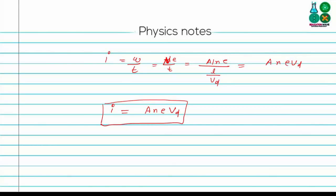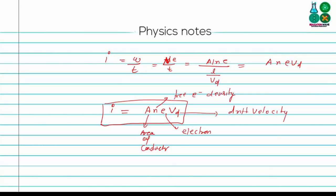This equation I = nAvd is also remembered using the short form 'nAvD'. Here A is the cross-sectional area of the conductor, n is the free electron density, e is the electron charge, and vd is the drift velocity.